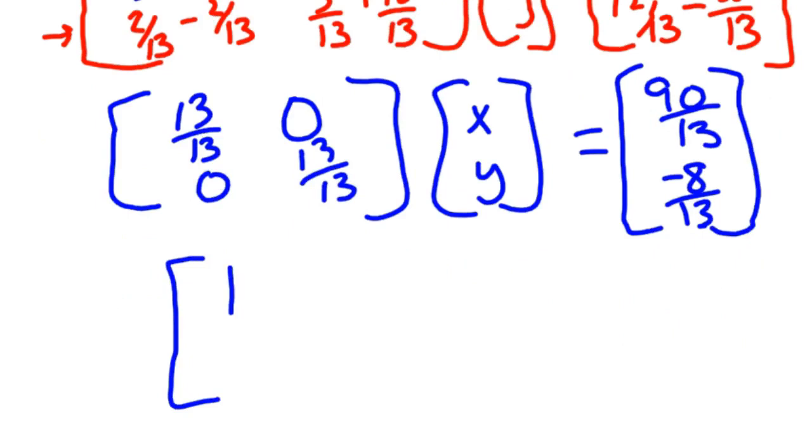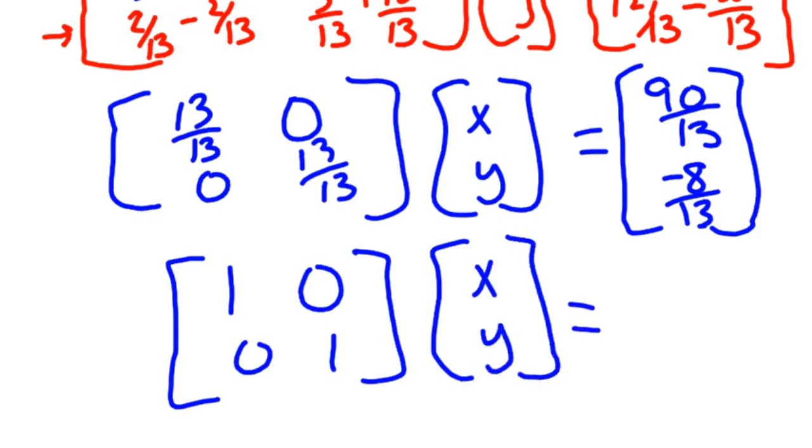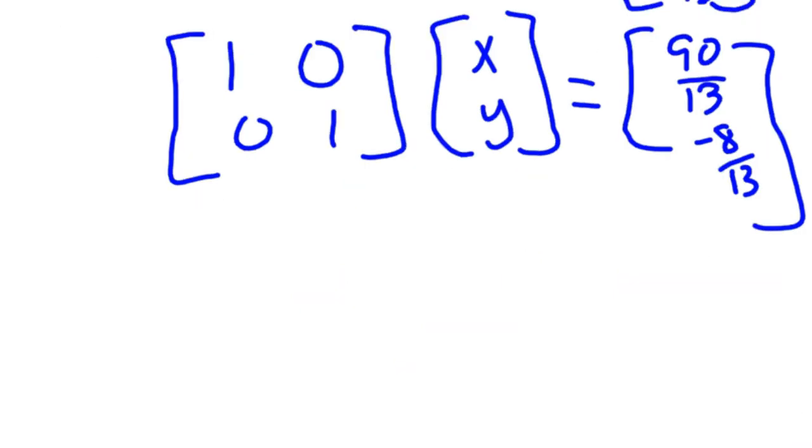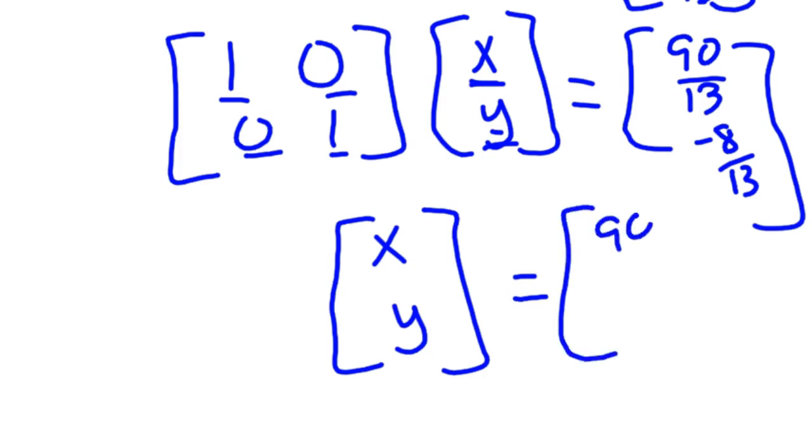And so you've got the identity matrix, which is 1, 0, 0, 1, times x, y, equaling 90 thirteenths and negative 8 thirteenths. And if you took 1 times x and 0 times y, you'd get x. And then 0 times x and 1 times y, you'd get y. So if you multiply the identity times x, y, you'd just end up with the matrix x, y, and it equals 90 thirteenths over negative 8 thirteenths. And so x is 90 thirteenths, y is negative 8 thirteenths. And again, we found the same answer. It's just kind of a cool process. It takes a little longer than Cramer's rule, but I just love the beauty of it. So I hope this helps you kind of see some uses for the inverse matrix and Cramer's rule and the determinant.